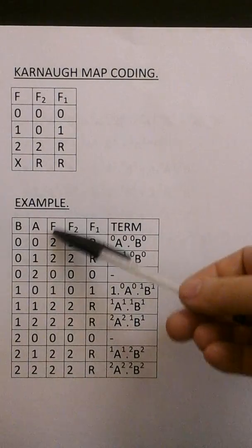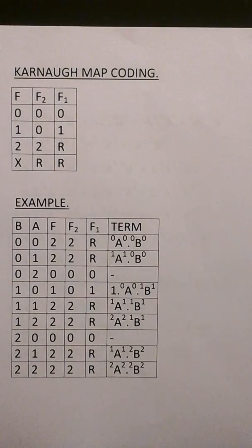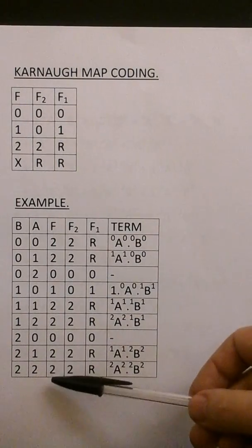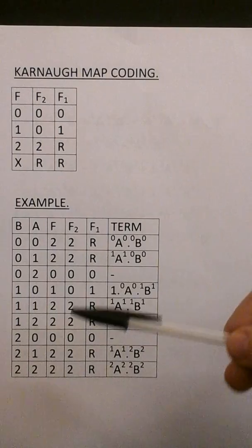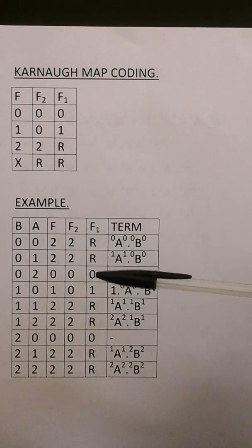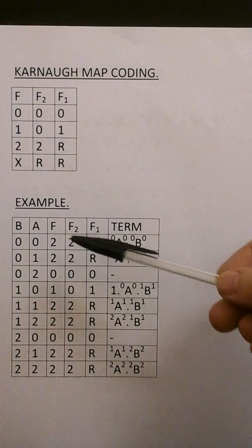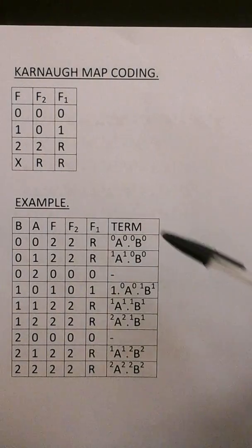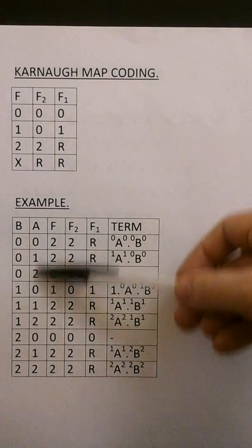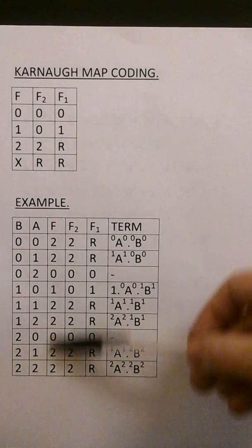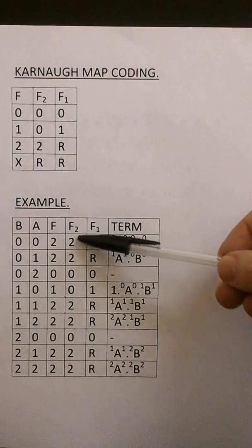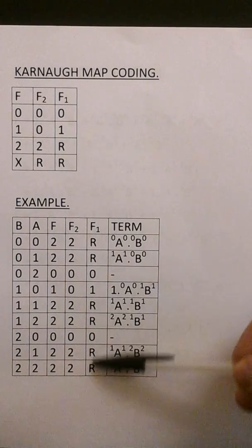Here we have an example of a function. This is a function which has been described in the reference I showed you at the beginning of the video. This is their function and they give a minimized result which I'll be presenting. So inputs A and B here, function there. I've used the coding for Karnaugh map on F1 and F2 there.